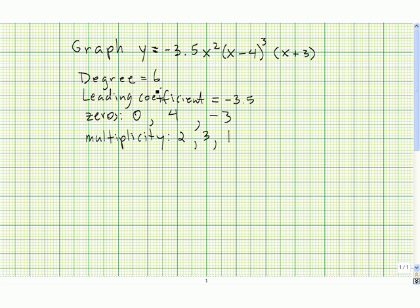So because we have a degree 6 and a leading coefficient of negative 3.5, we know that the end behavior is that it's going to go down on the left-hand side and down on the right-hand side.